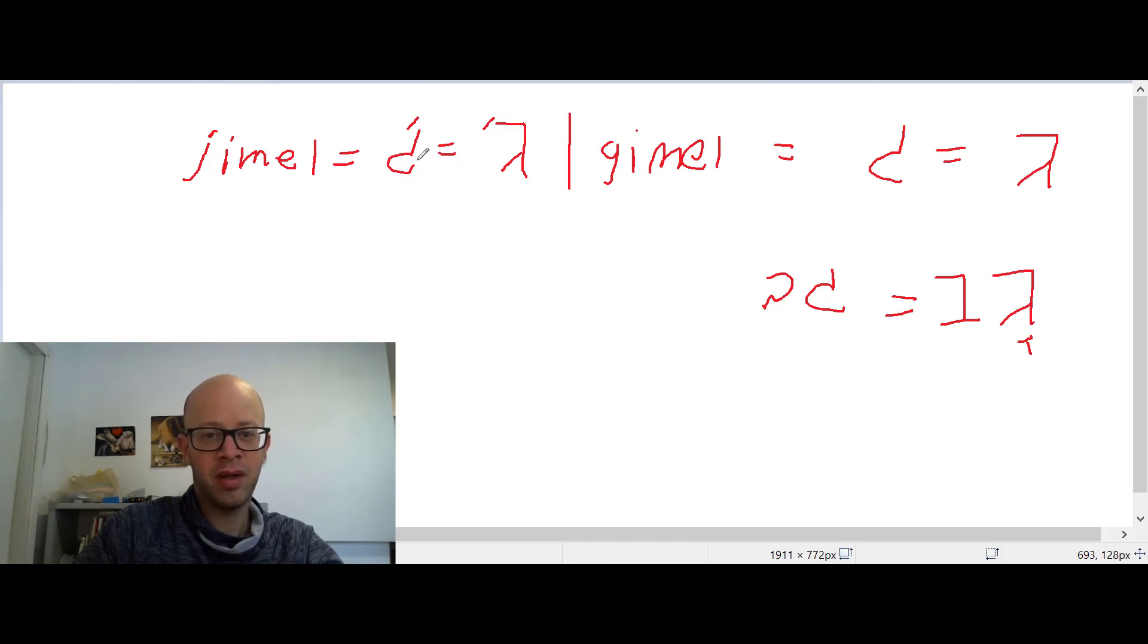So this is gov. And these letters, if you write, let's say there's no word like that, but let's say I want to write the word jav, I would just add the apostrophe like that. But there's no word like that, so I'll delete it.